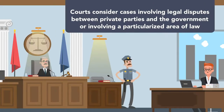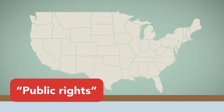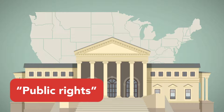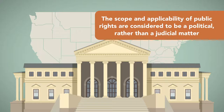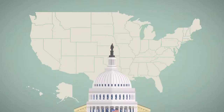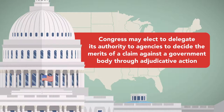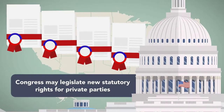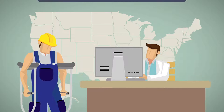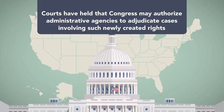At the same time, the courts consider cases involving legal disputes between private parties and the government, or involving a particularized area of law closely related to a federal regulatory scheme, to be matters of public rights, and therefore within the competence of administrative courts. This is because the scope and applicability of public rights are considered to be a political rather than a judicial matter, and generally under the authority of Congress and the President to address. Therefore, Congress may elect to delegate its authority to agencies to decide the merits of a claim against the government body through adjudicative action. In addition, Congress may legislate new statutory rights for private parties, such as the right to workers' compensation when injured in the course of employment. The courts have held that Congress may authorize administrative agencies to adjudicate cases involving such newly created rights which are not part of the common law.